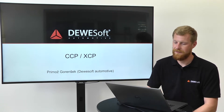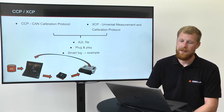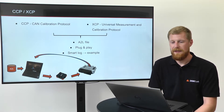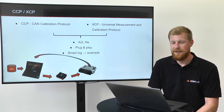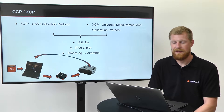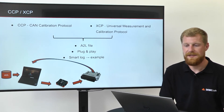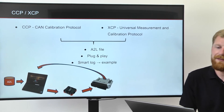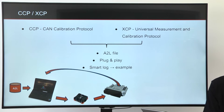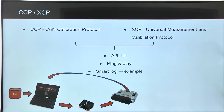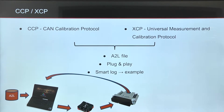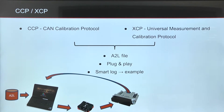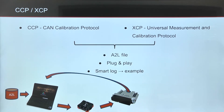CCP and XCP are used to get data from the ECU directly. CCP is a CAN Calibration Protocol, and XCP is the Universal Measurement and Calibration Protocol, which is based on Ethernet or CAN.